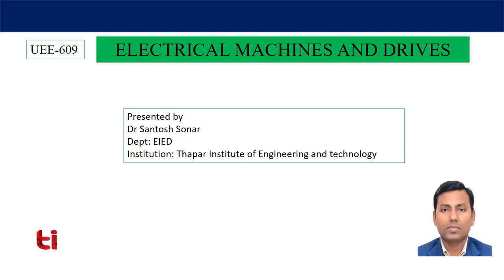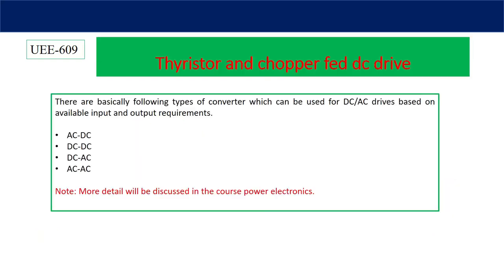A chopper is nothing but a DC-to-DC converter. The input voltage is a fixed DC voltage and the output is a variable DC voltage, and by controlling the variable output voltage we can control the speed of a DC motor. Today I will discuss this DC-to-DC converter based DC motor drive.